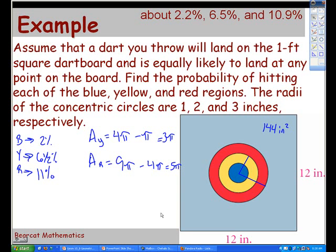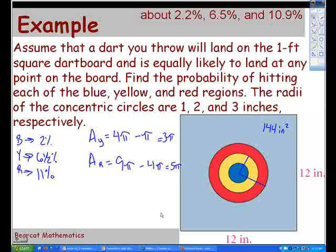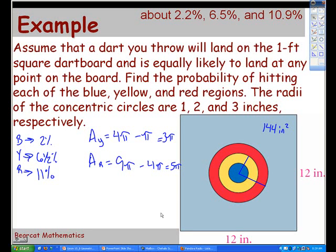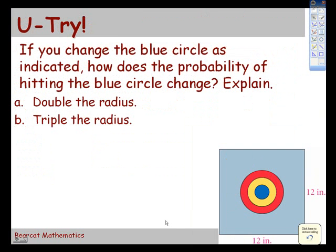That problem is a little more complex because to find the area of the stuff we're interested in, we have to consider that subtraction thing going on to subtract out the part of the color that we don't want. Here's one for you to try. We're going to change the blue circle as indicated. How does the probability of hitting the blue circle change if we double the radius of the blue circle? So the blue circle had a radius of 1, right? So if we double the radius of the blue circle, what's going to happen to the probability of hitting it? It's going to double?